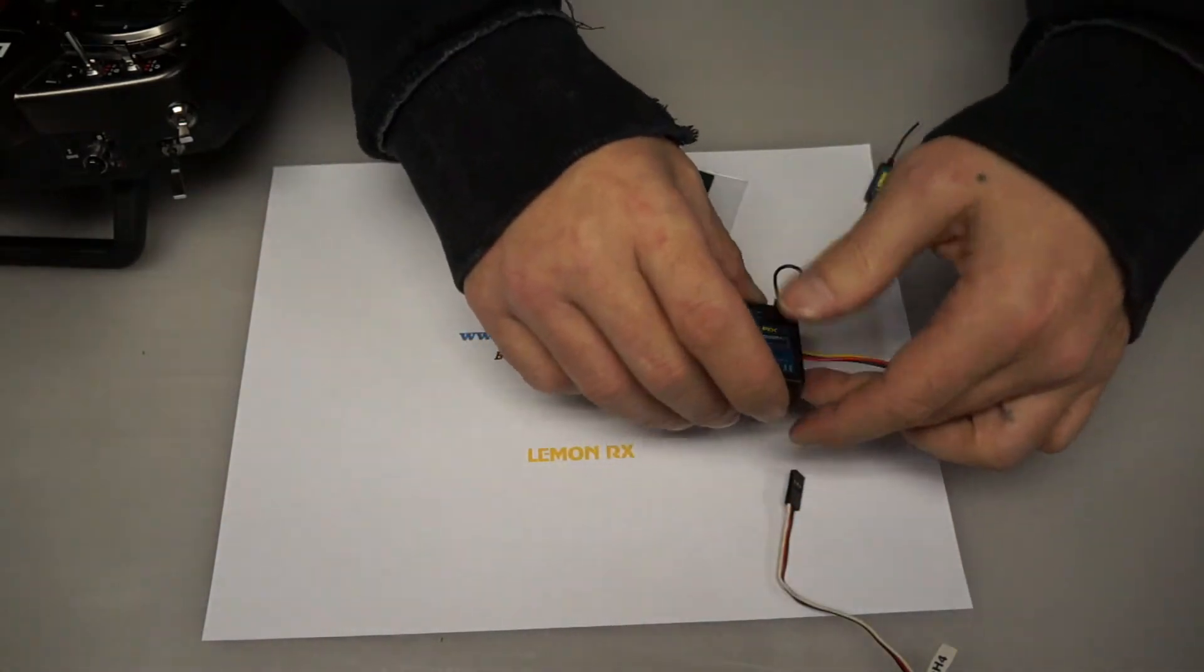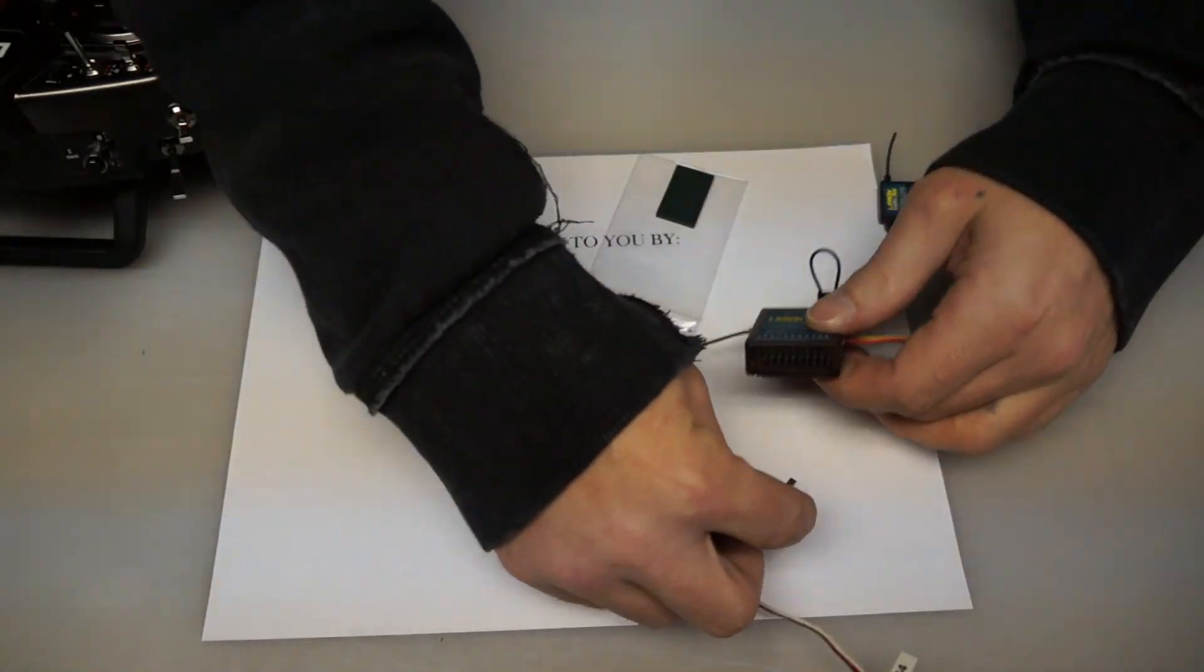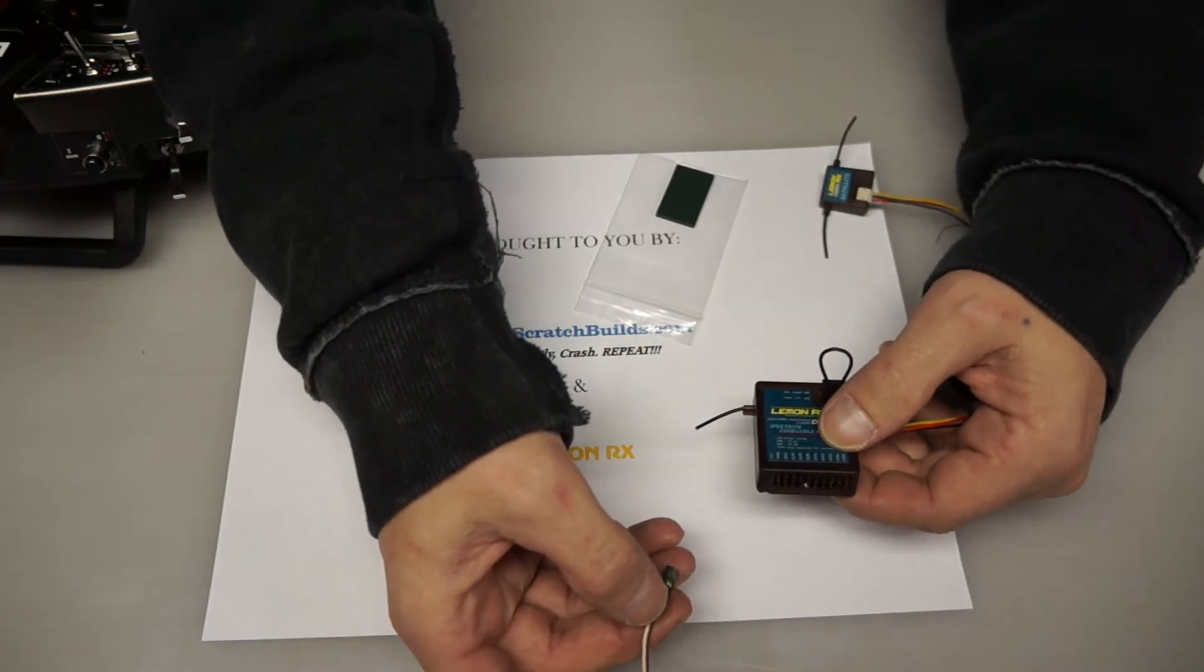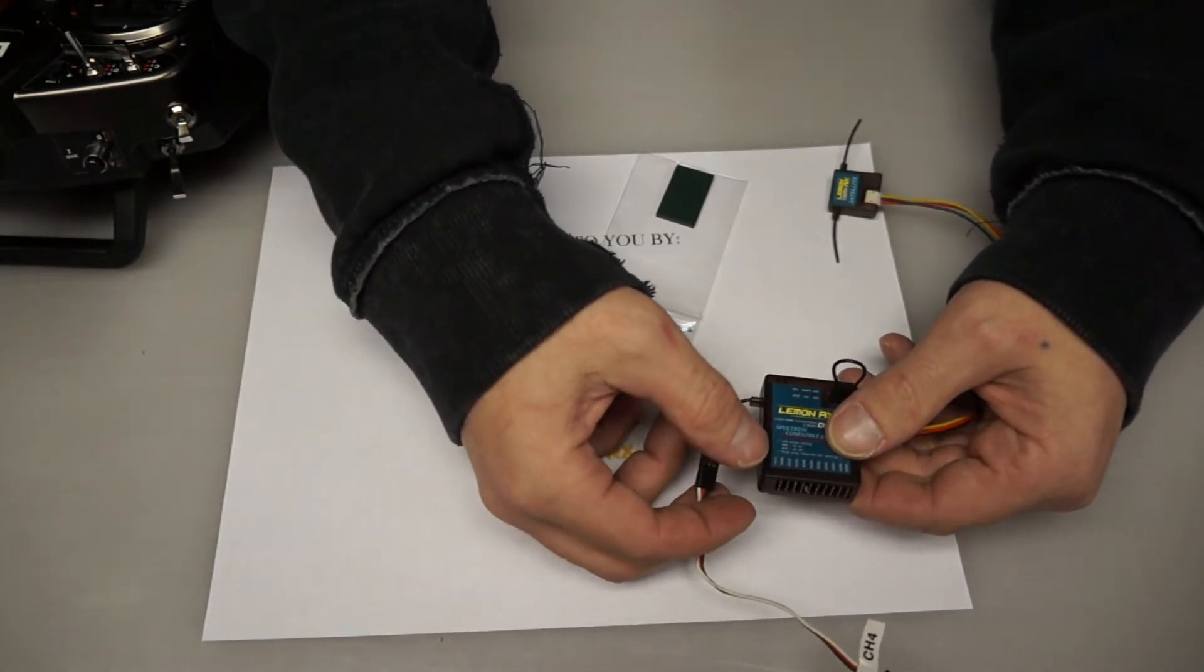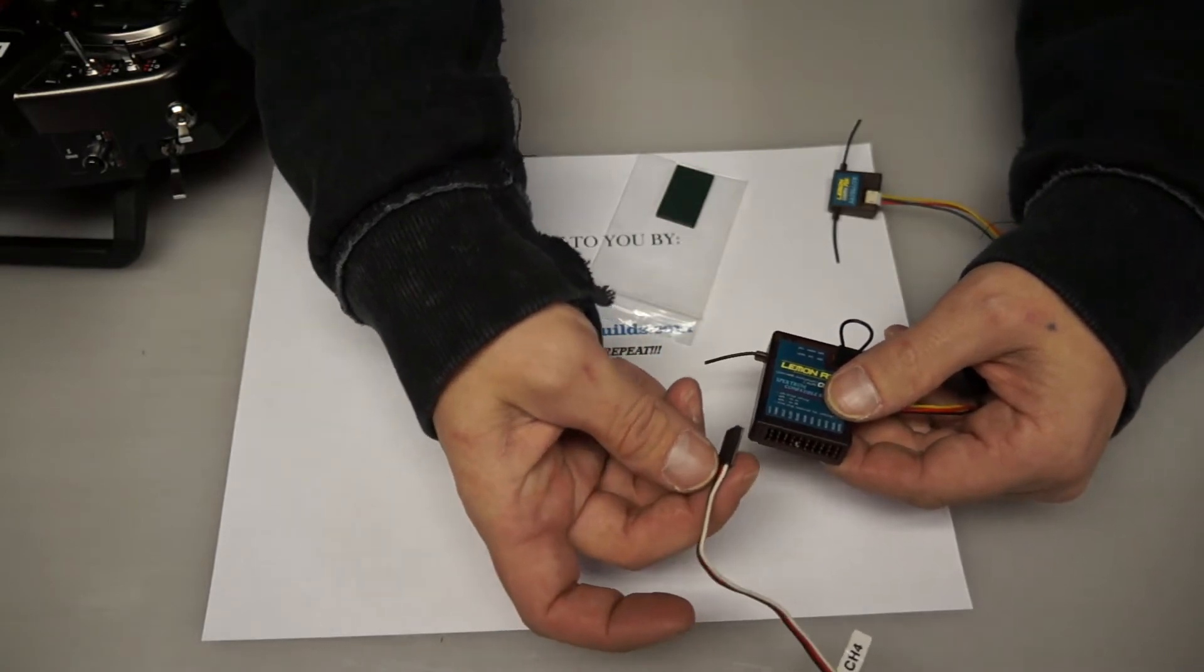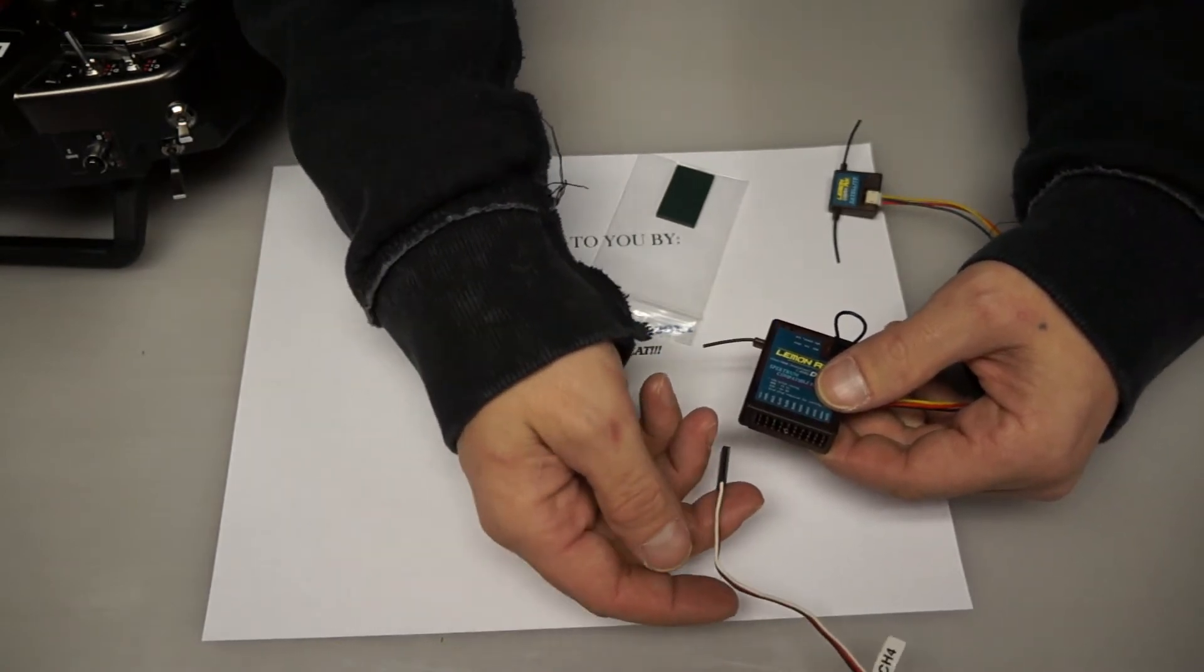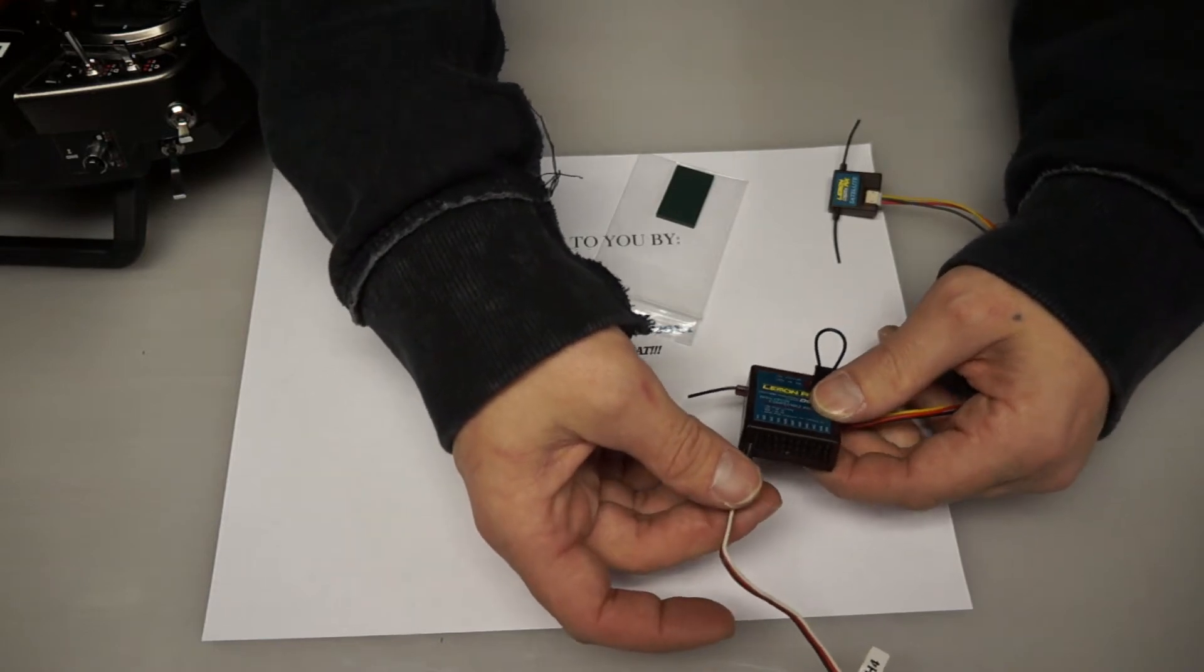And then lastly, we're going to provide power to the receiver. You want to provide that power to the throttle channel. On the Lemon receivers, there's a diagram on the face of it. The signal wire is always up and your negative wire, which is the black wire, is going to be down.